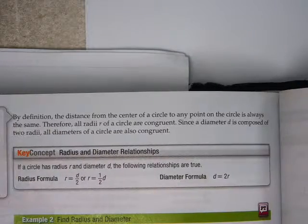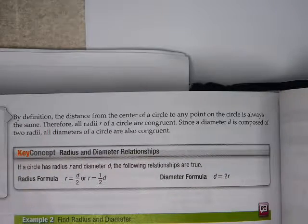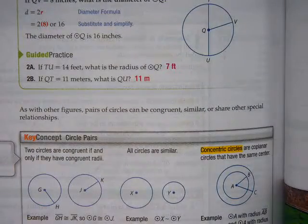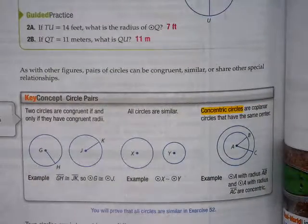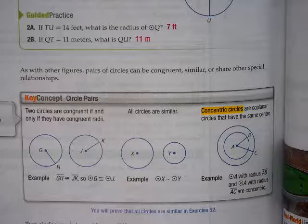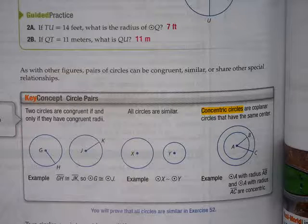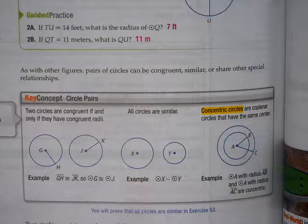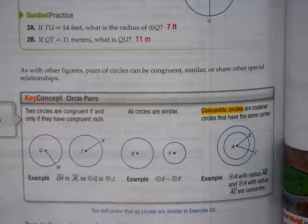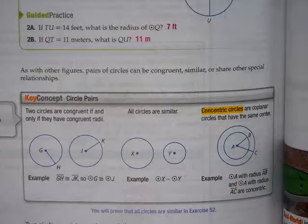Going backwards, the radius is half the diameter. But as far as pairs of circles go, there's all these different types of circles we could have in comparison with them. Two circles are congruent if they have the same radius. That's all we need is just the radius. All circles are similar. It's kind of silly to talk about similar circles. They're all similar.